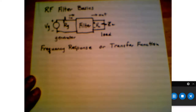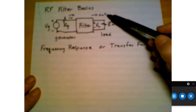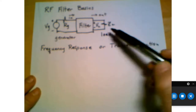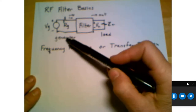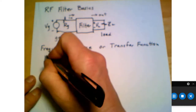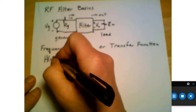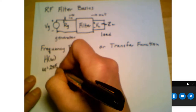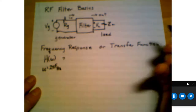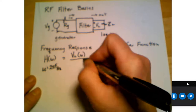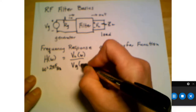Let's talk about RF filter basics. When we talk about a filter, what we're looking for is something that controls the frequencies that come out based on the frequencies that go in, or those that hit the load based on those coming from the generator. We define that in terms of the frequency response or the transfer function, which we call H of omega, where omega is 2 pi times the frequency in hertz. That is defined as the voltage at the load divided by the voltage at the generator.